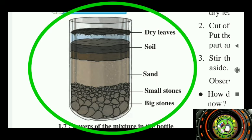If you take a plastic bottle, you can see the different layers inside it. The bottom layer is made of big stones, the next layer is made of small stones, then there is a layer of sand, and finally a layer of soil and dry leaves on top.